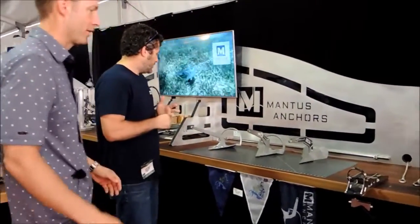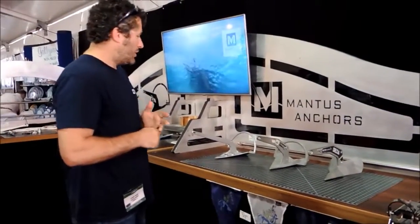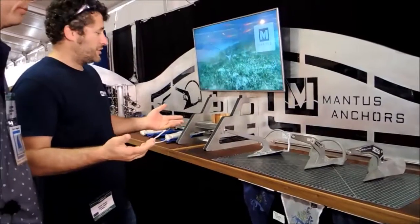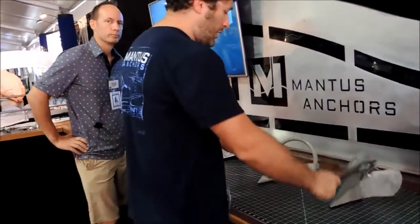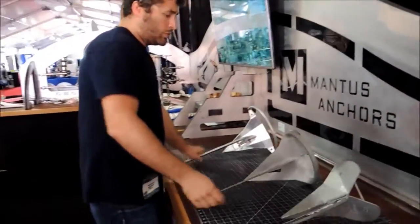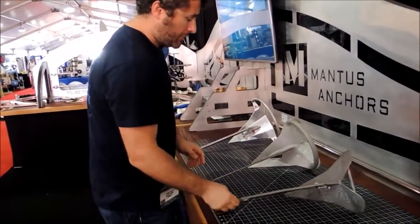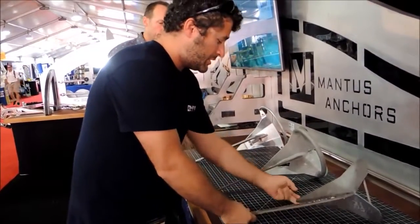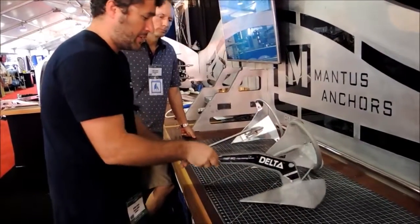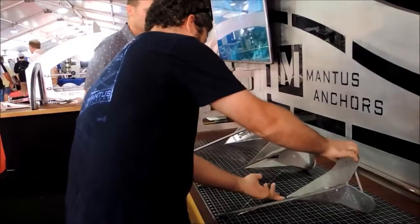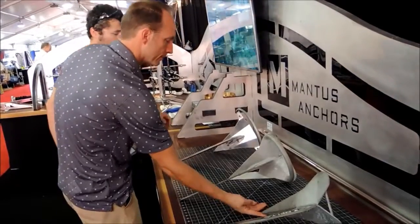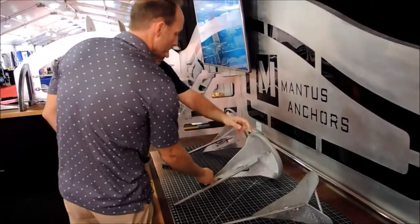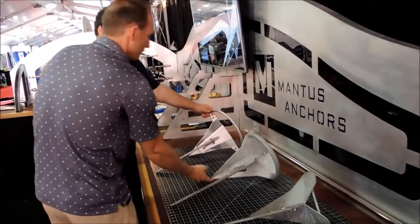What we have over here is a display of some of the popular anchors. This is a Delta, the Rocna, and the Mantis. All anchors weigh about the same. If we lay them on the side, when you drag the anchor along, what the bottom feels is that nose pressure, the weight on the nose. It decides whether the anchor is going to bite enough.